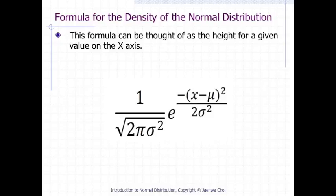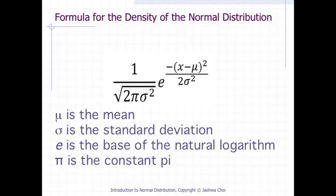This is the formula for the density of the normal distribution, which can be thought of as the height for the given value of the x-axis. The parameters mu and sigma are the mean and the standard deviation respectively and define the normal distribution. The symbol E is the base of the natural logarithm and pi is the constant.